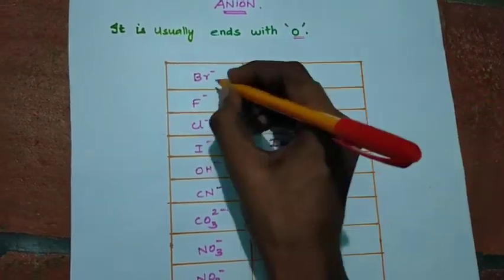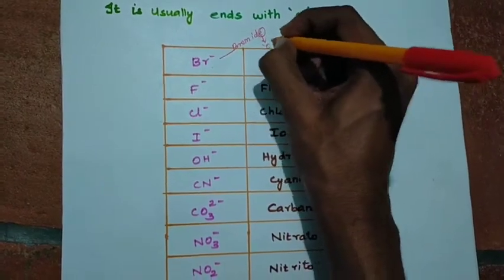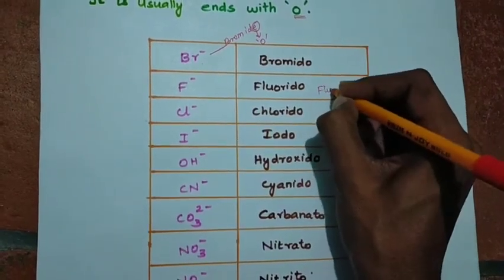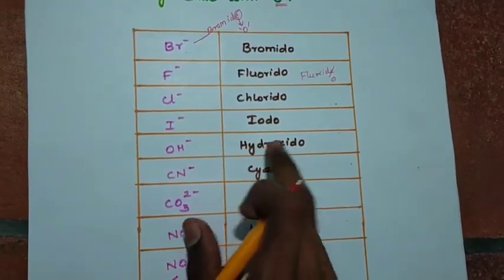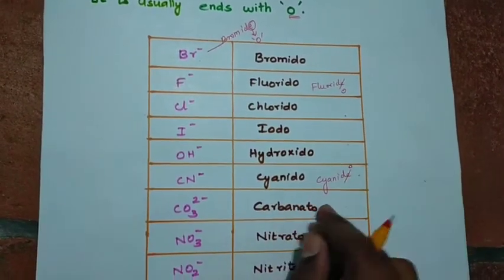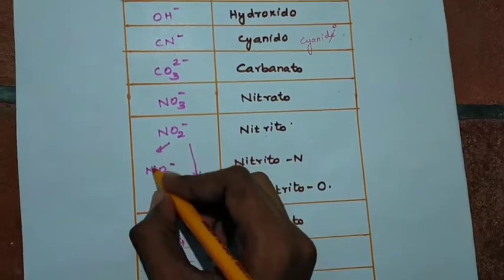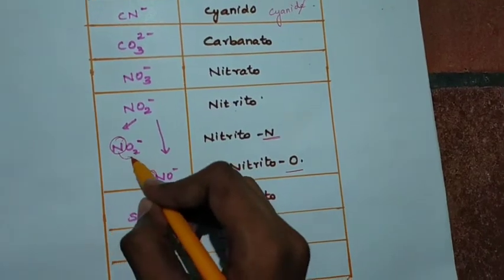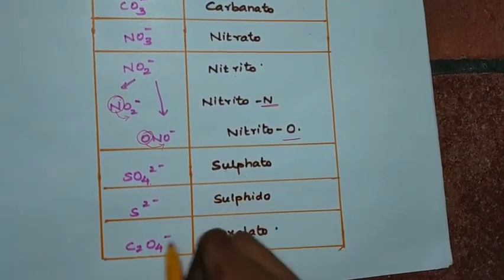For anionic ligands, the name usually ends with the letter 'O'. For example, bromide becomes 'bromido' — the 'E' is replaced by 'O'. Similarly, fluoride becomes 'fluorido', chloride becomes 'chlorido', iodide becomes 'iodido', hydroxide becomes 'hydroxido', cyanide becomes 'cyanido'. For carbonate: 'carbonato', nitrate: 'nitrato'. For NO2, there are two cases — if nitrogen is the donor it is 'nitrito-N', and if oxygen is the donor it is 'nitrito-O'. Also sulfate is 'sulfato', sulfide is 'sulfido', and oxalate is 'oxalato'.